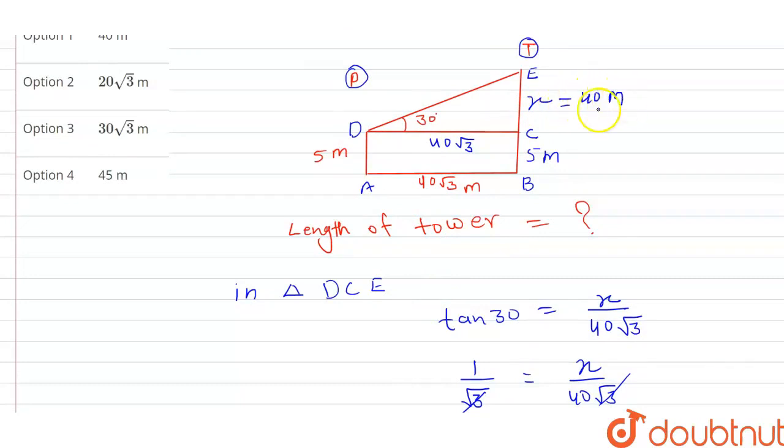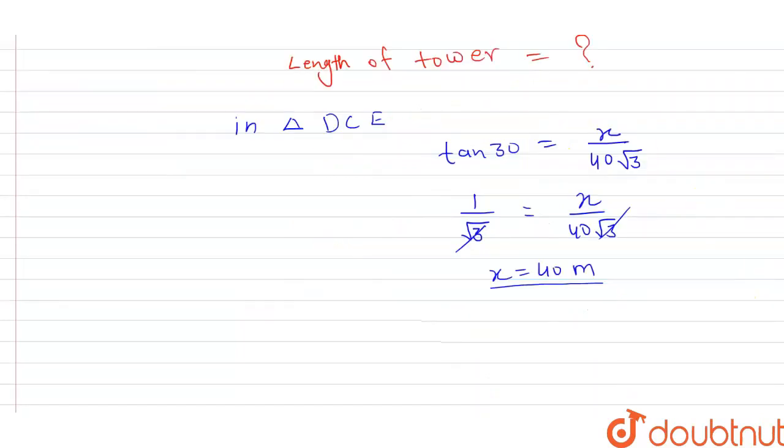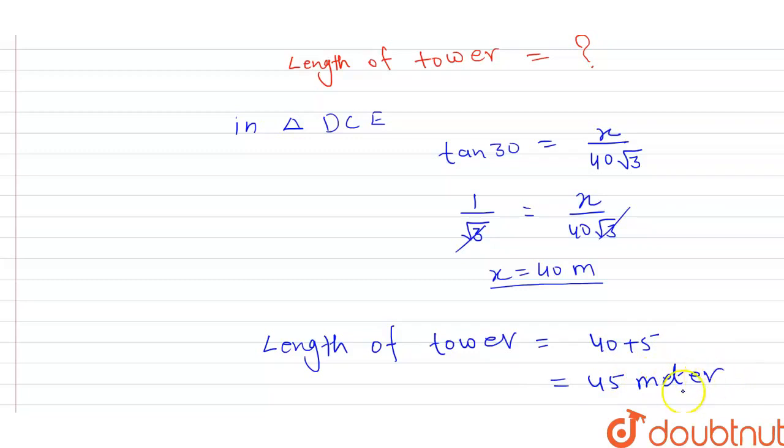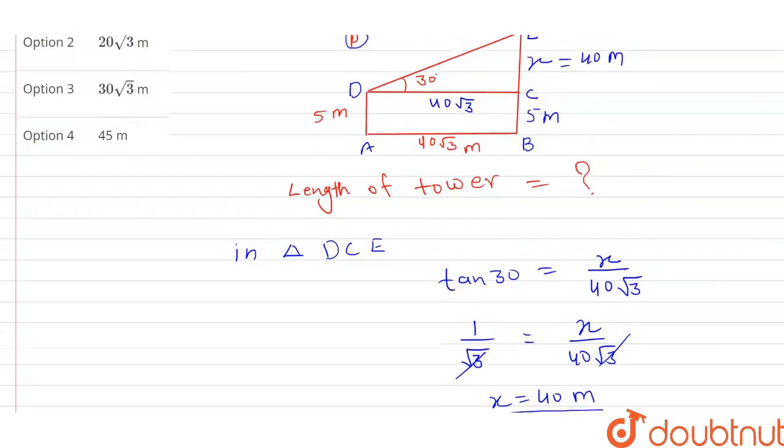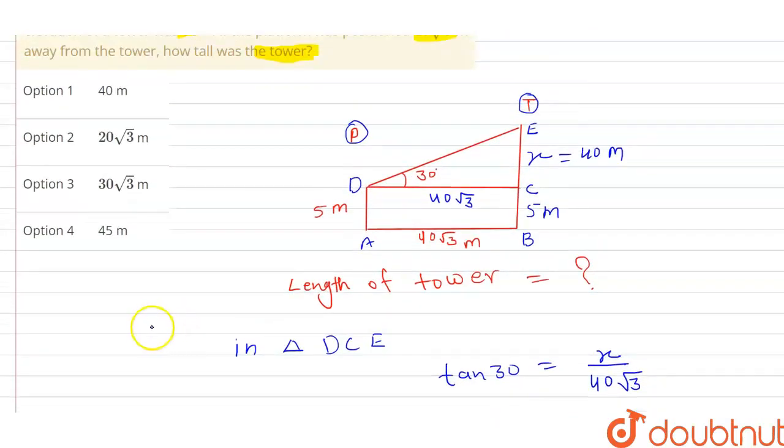40 meter, 5 meter यह पहले से था. So length of tower क्या हो जाएगा, length of tower यह हो जाएगा 40 plus 5 means 45 meter. This is the right answer of this question. अगर मैं option की बात करूँ तो option number 4, this option is correct here. Thank you guys.